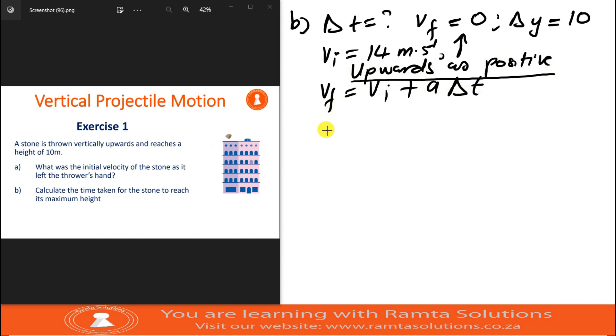So our final velocity is zero, our initial velocity we said it was 14, and our acceleration which is downwards motion will be negative 9.8. Delta t equals 14, therefore delta t is 14 over 9.8, which is 1.43 seconds.